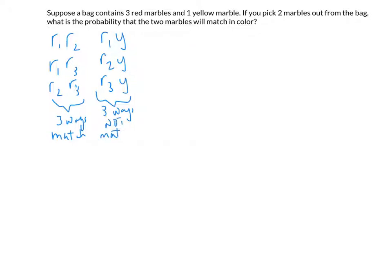Making the list is fairly easy when the events are small and there aren't a lot of marbles. With three ways they match and three ways they don't match — excluding the order in which you drew them — it's a 50/50 outcome: three out of six that they match versus three out of six that they don't.